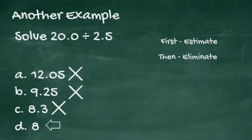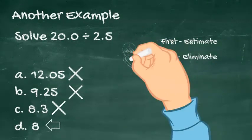The correct answer is choice D, 20.0 divided by 2.5 equals 8.